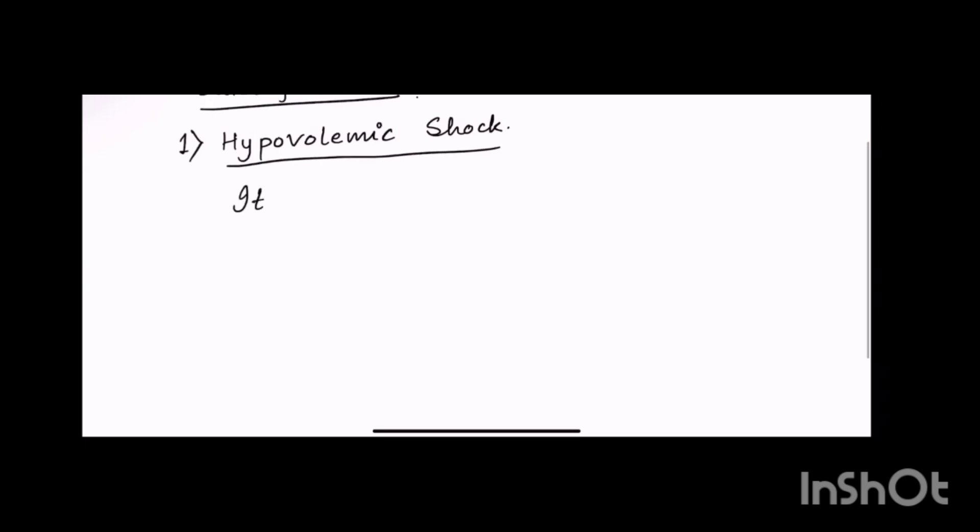The different types of shock: one is hypovolemic shock, second obstructive, third distributive, fourth endocrine and fifth others. Let us start with hypovolemic shock. Why does hypovolemic shock occur? Because there is reduced circulatory volume. As the name says hypovolume, that means volume kam ho gaya hai, circulatory volume kam ho gaya hai.